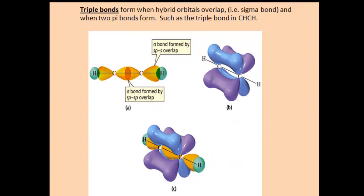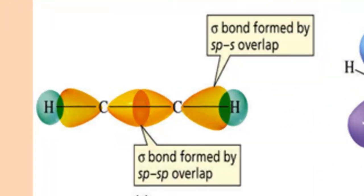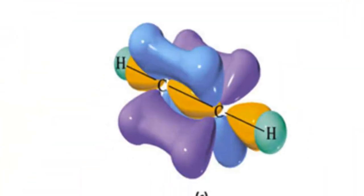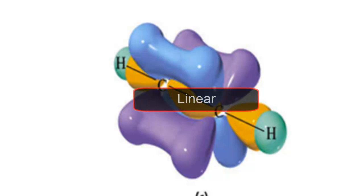Triple bonds form when hybrid orbitals overlap and when two pi bonds form, such as the triple bond in ethyne. The figure first shows the sigma bond formation by the overlap of the sp hybrid orbitals from each carbon atom, then shows the pi bond formation — the overlap of two pairs of unhybridized p orbitals from each carbon atom — and finally the entire molecule. It's important to realize that sigma bonding can occur without pi bonding, but pi bonding generally occurs with sigma bonding.